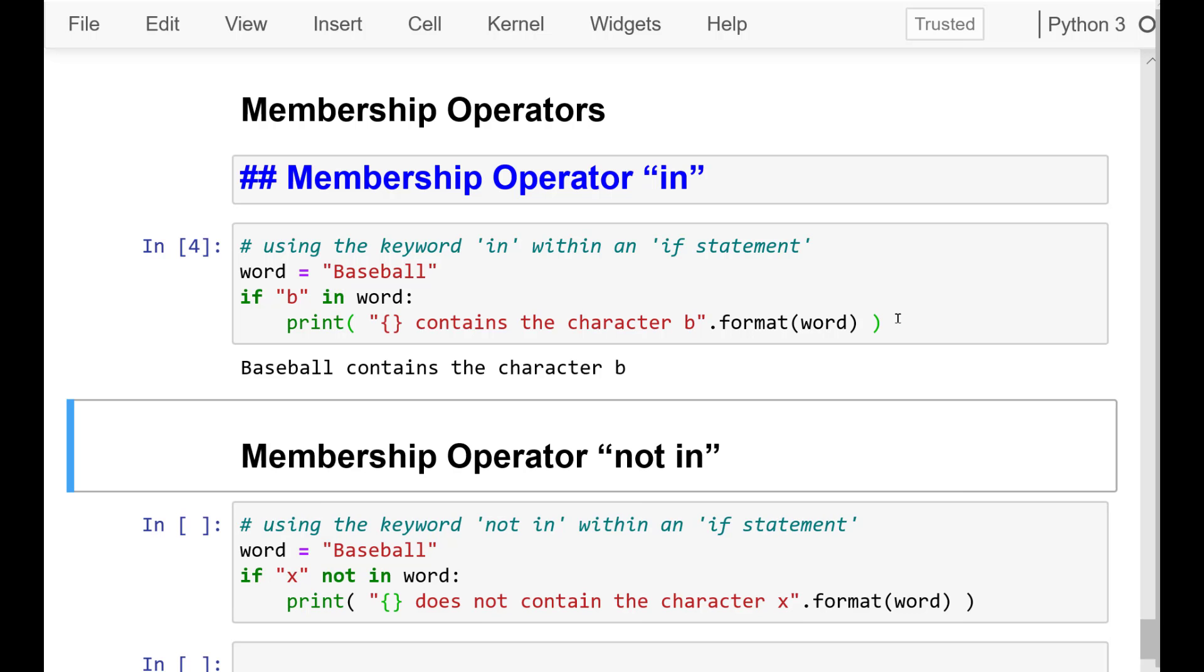If we run that cell, the resulted output is baseball contains the character B. This is case sensitive, but luckily for us the word baseball has one lower case and one upper case B. Another membership operator is NOT IN.